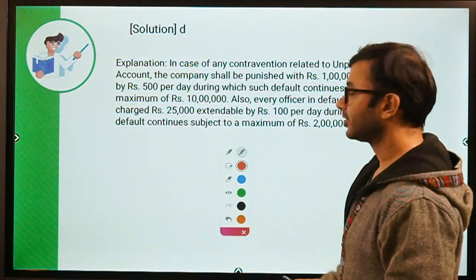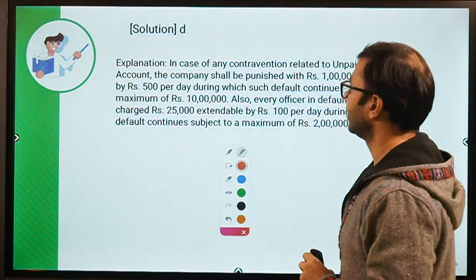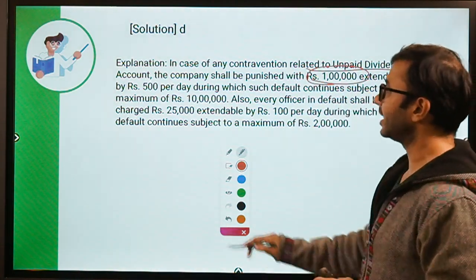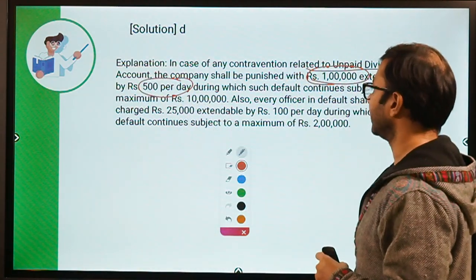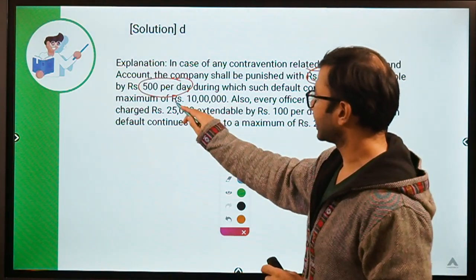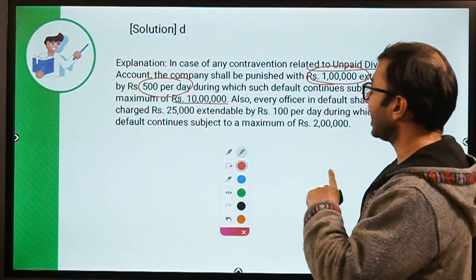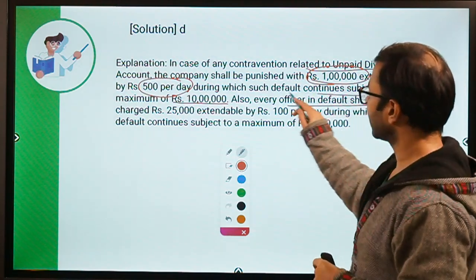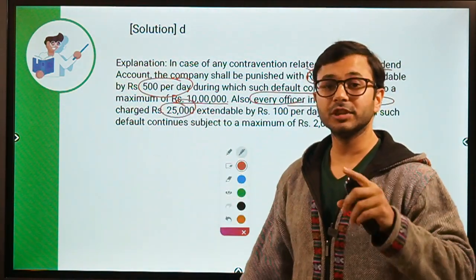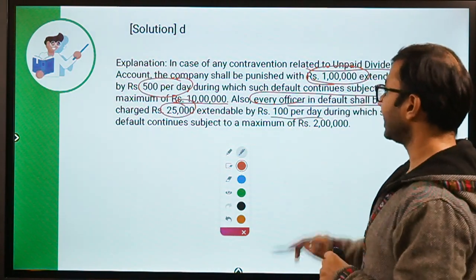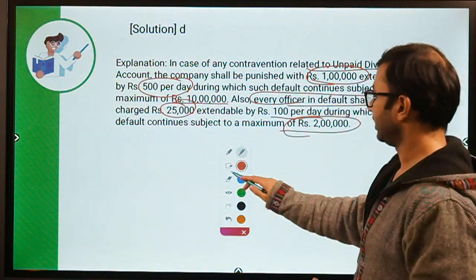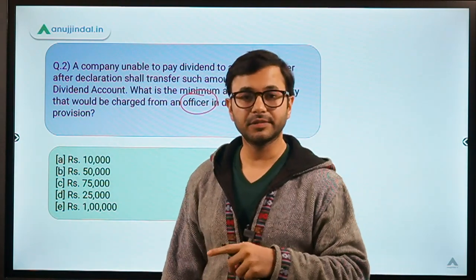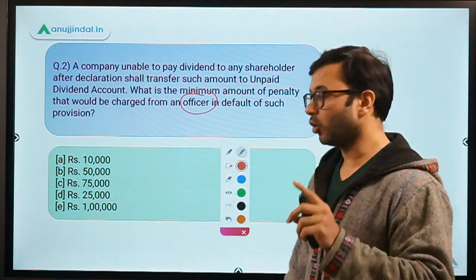In case of any contravention related to unpaid dividend account, the company shall be punished with 1 lakh, extendable by 500 per day during which such default continues, subject to a maximum of 10 lakh. Remember: 1 lakh minimum, 500 additional per day, maximum 10 lakh — but this is for the company. Every officer in default: the minimum for the officer is 25,000, extendable by 100 per day, maximum of 2 lakh. This question talked about the officer and not the company, which is why the answer is 25,000 and not 1 lakh.